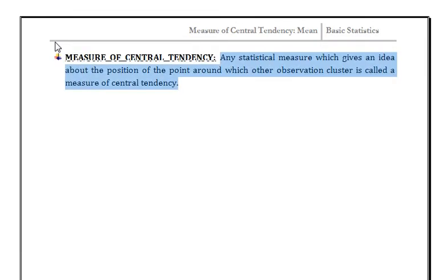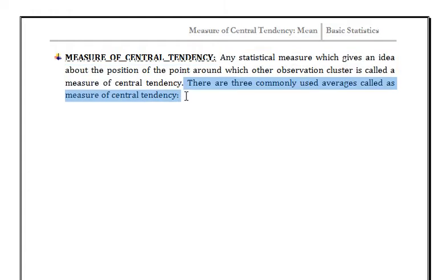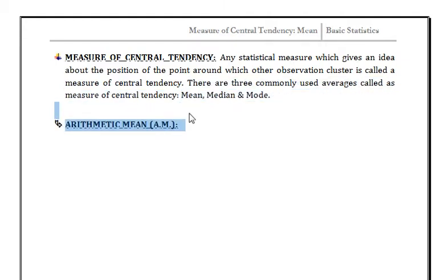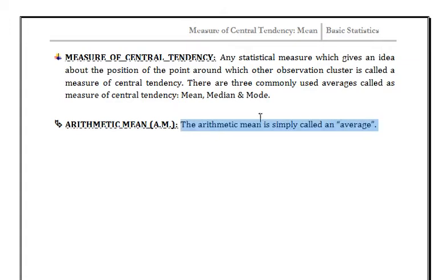In this video we discuss the measure of central tendency. Any statistical measure which gives an idea about the position of the point around which other observations cluster is called measure of central tendency. For any data, the most representative number is known as central tendency. There are three commonly used averages: mean, median, and mode. Here we discuss arithmetic mean.